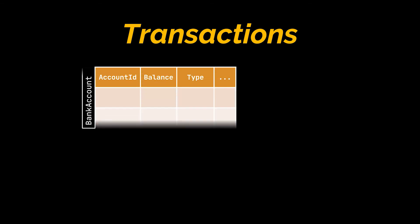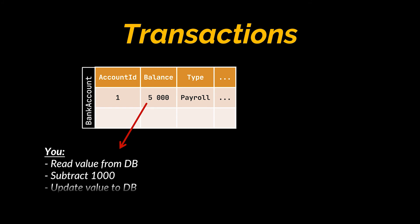Suppose you have a joint bank account between you and your wife, and both of you decide to withdraw from this account at the same time. If in this account you have five thousand dollars and you each decided to withdraw a thousand, what the DBMS should do is read the value five thousand and subtract two thousand from it.